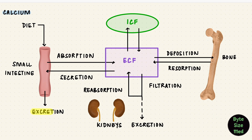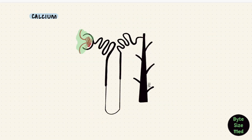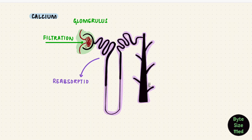The main route of calcium excretion in the body is the GI system; the kidney makes up a smaller amount. However, the kidney is important as it can be regulated. Regulation of calcium is important to maintain homeostasis. So calcium gets filtered by the glomerulus, then gets reabsorbed and excreted by the renal tubules. There is no secretion of calcium by the kidney.